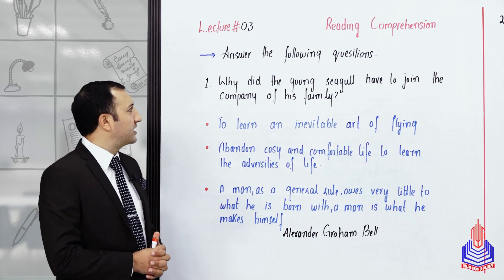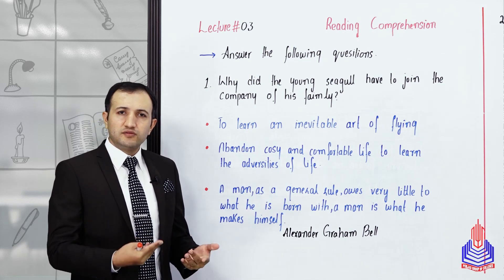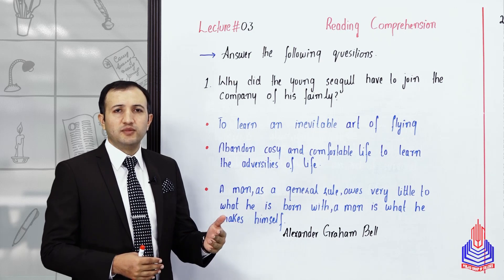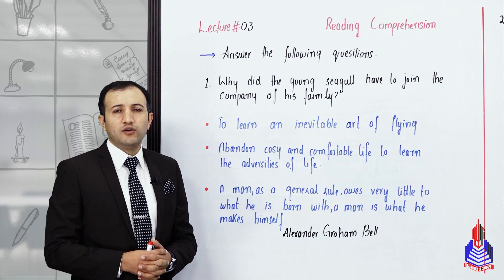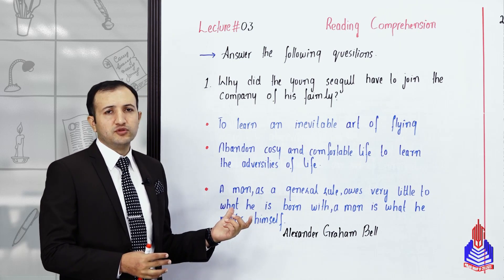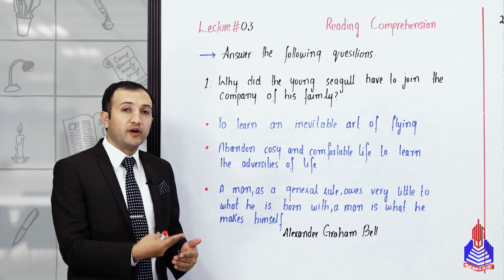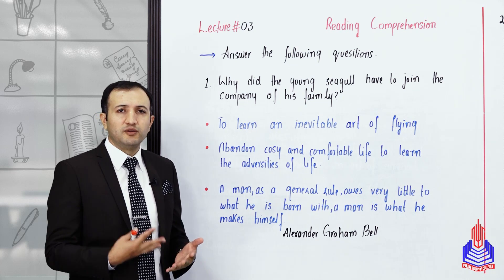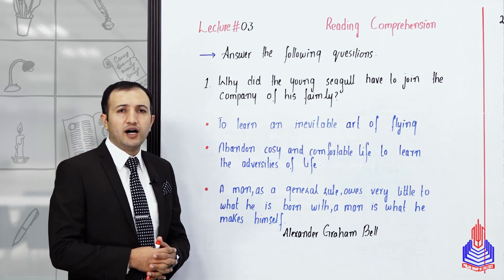The first question is: why did the young seagull have to join the company of his family? You are familiar with the story — the young seagull is alone on the ledge while his parents and siblings have flown away and are enjoying fishing. This is an interpreting type of question.